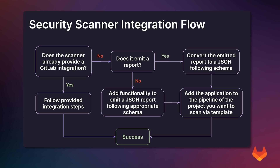As an overview, here's a flowchart on security scanner integration. If a security scanner already provides a GitLab integration, simply follow the provided integration steps from the third-party scanner tool. If it does not, check if it emits a report — if it does, follow the required GitLab schema for the particular scanner and add the application to the pipeline via a template. If it does not emit a report, add the functionality for it to emit a JSON report following the appropriate schema, create the template as seen in this video, and then your custom scanner can populate all these different GitLab integration points.